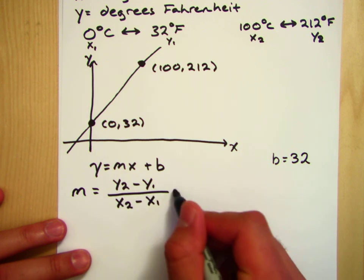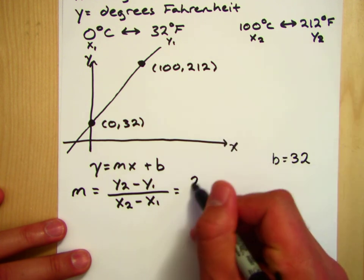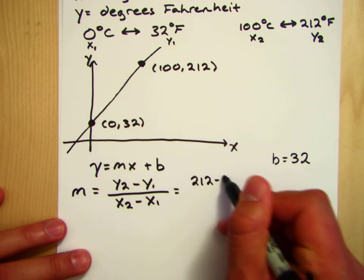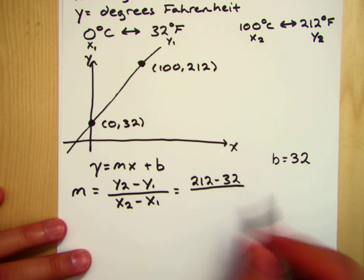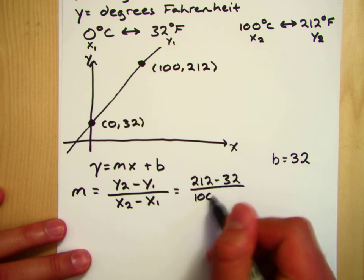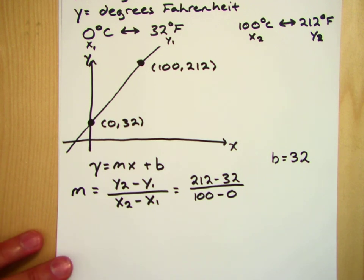And we remember from previous problems that the slope m is just equal to the change in y over the change in x. And in this case, y2 and y1 are 212 and 32, and x2 and x1 are just 100 and 0.